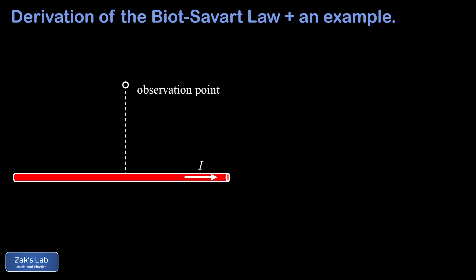To get started with the derivation, we have a diagram of a long straight wire with an observation point above it. We have a current moving to the right, and we want to view the wire as a bunch of tiny positive charges moving to the right so we can use our previous result for the field of a point charge. We slice the wire into infinitesimal dl's each with an infinitesimal charge dq, and each piece moves with drift velocity v_d — the average velocity of the charge carriers in the wire.